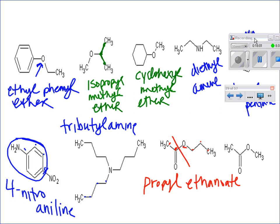Another ester: the first name is methyl. Remember, you do count the carbon that has the double-bonded oxygen when naming the last name part — there's propanoate, pentanoate, butanoate, and ethanoate as options depending on carbon count.